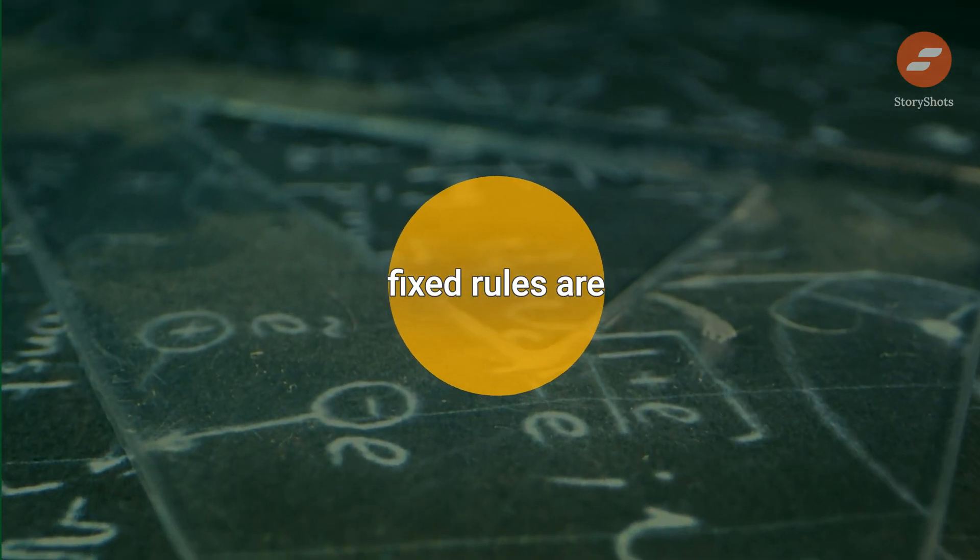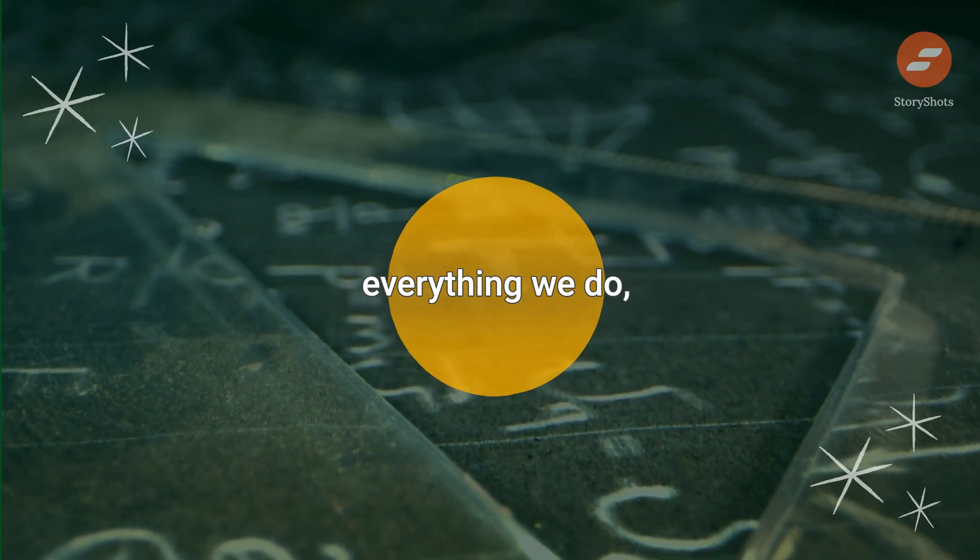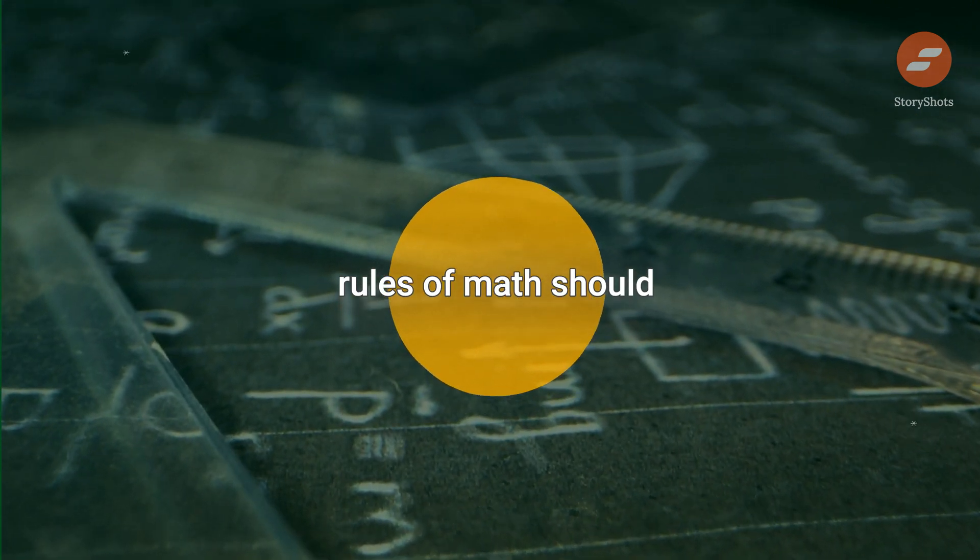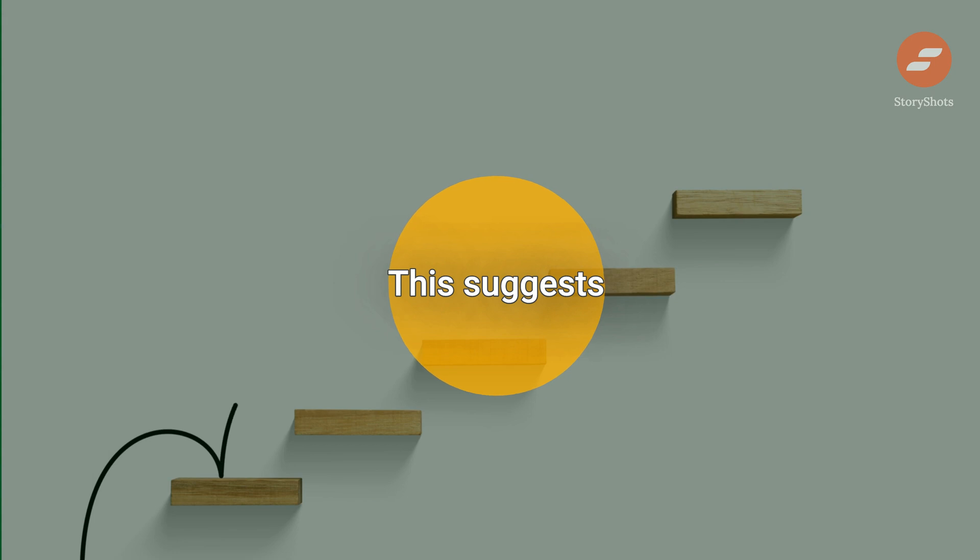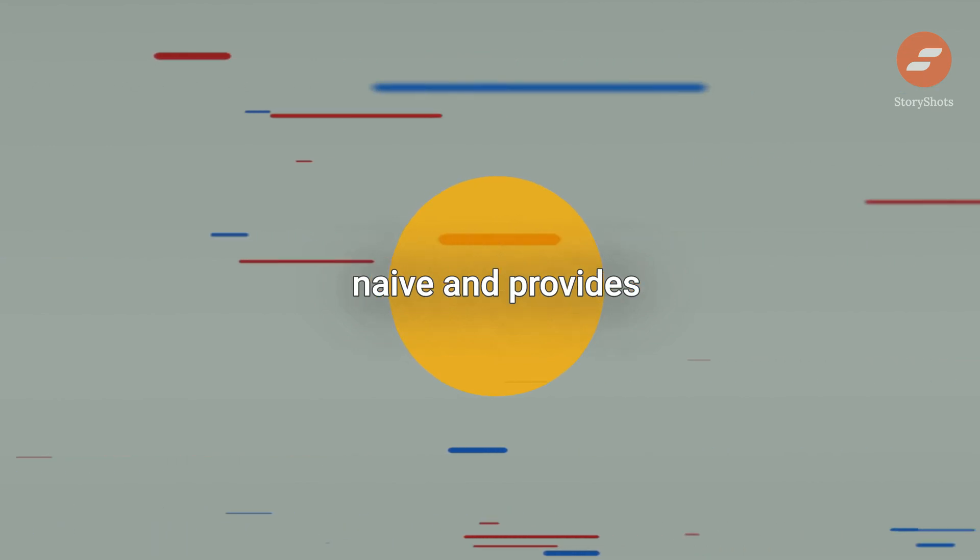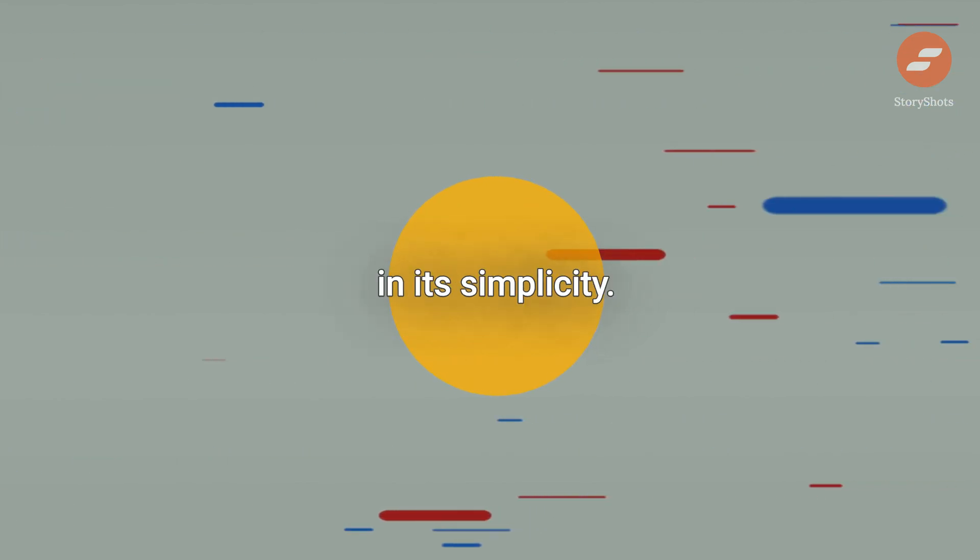If math and its fixed rules are at the heart of everything we do, then following the rules of math should always lead to the correct outcome. This suggests that you can avoid being wrong if you follow these rules step by step. This concept is not naive and provides a sense of comfort in its simplicity.